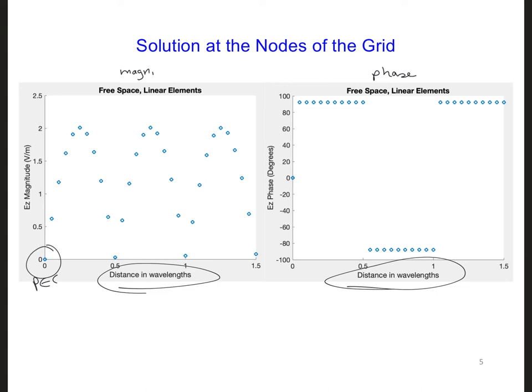Now, what about in between the nodes? We've only plotted the EZ values at the nodes. Can we expand our plot to include locations between the nodes? Well, it turns out we can.